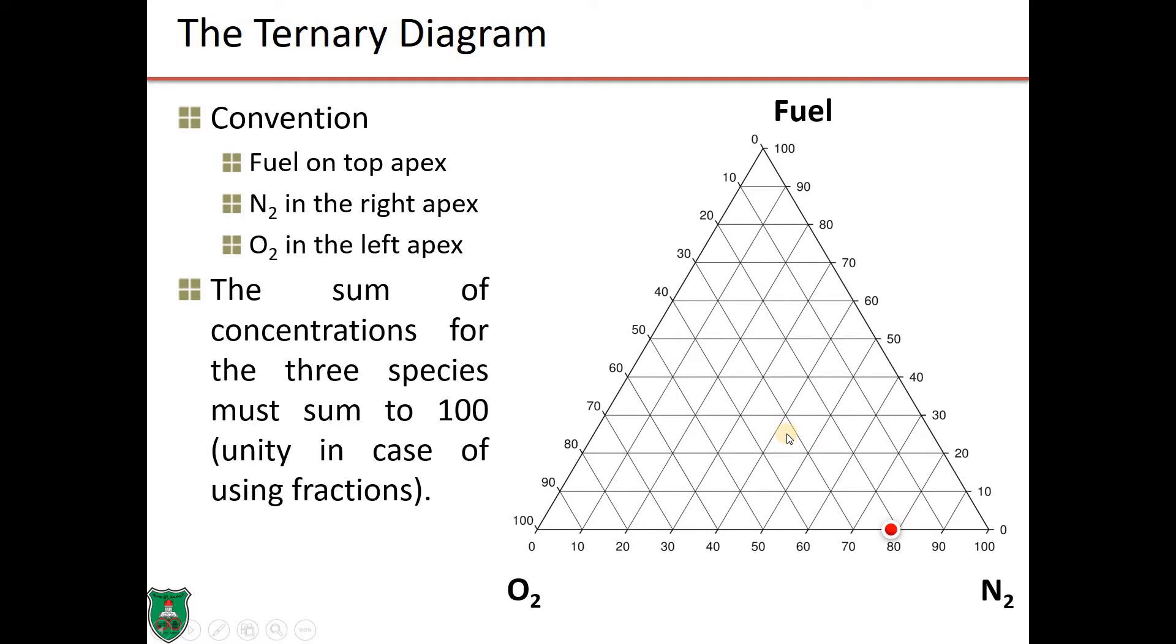So, to make sure that we understand those concepts, let us read some points on this ternary diagram. If I place this point here, what are the concentrations of oxygen, fuel, and nitrogen? Notice the triplet we are using. We start with the oxygen concentration, then the fuel concentration, and lastly the nitrogen concentration. Now, to read this point, we mentioned that this apex represents 100% oxygen. The sides opposite to it, those lines,